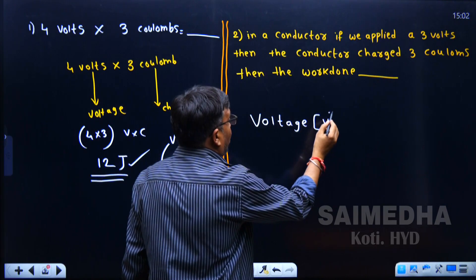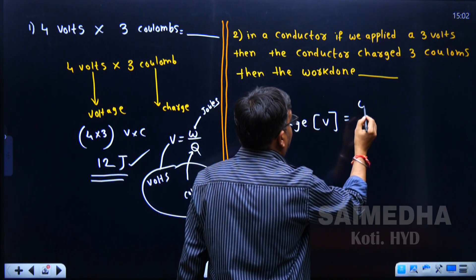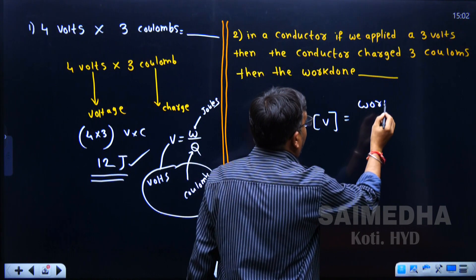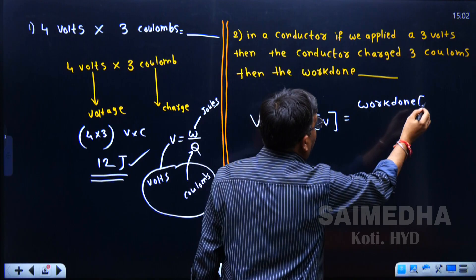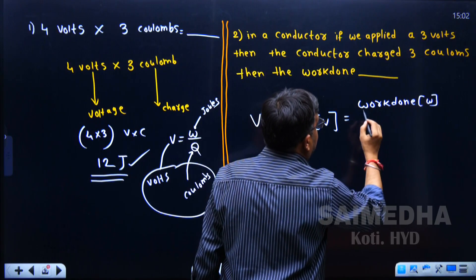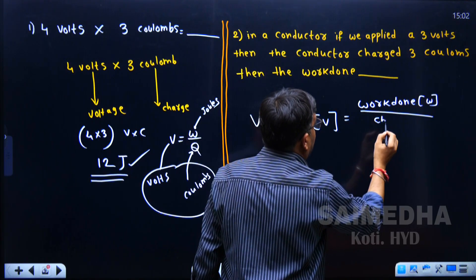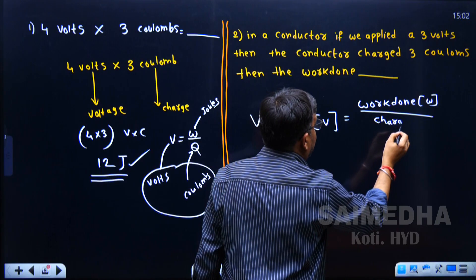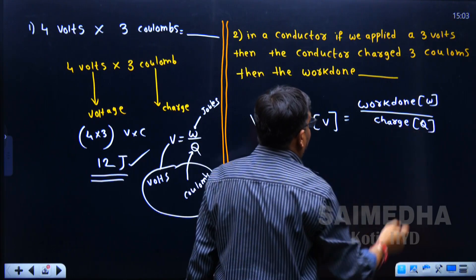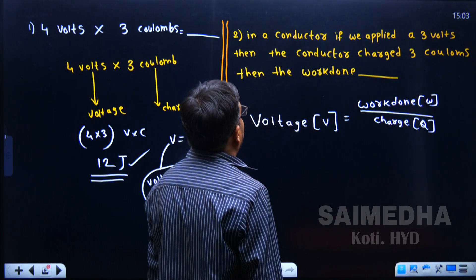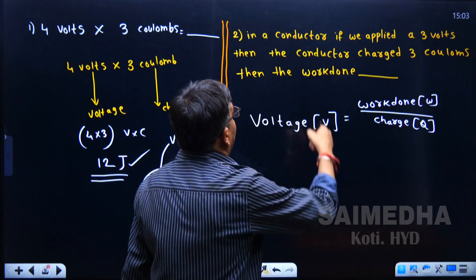Here also, we use the formula V equals W by Q. For this conductor, if we applied 3 volts, the voltage is 3 volts.